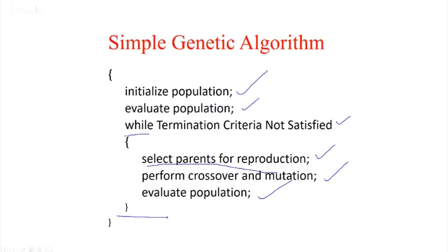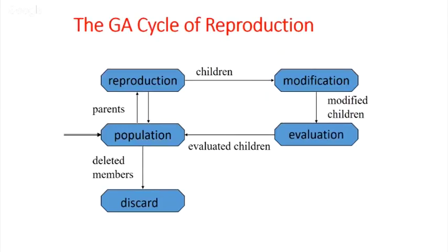If the termination condition is not satisfied, the algorithm continuously selects parents, performs crossover and mutation, evaluates again, and comes back to check termination. After evaluating, you also have to eliminate the unwanted solutions. This is how the algorithm works — graphically: there is a population, you select some parents, make them reproduce, the child undergoes crossover and mutation, you evaluate — if the child is the better solution you put it back into the cycle, otherwise you discard it.